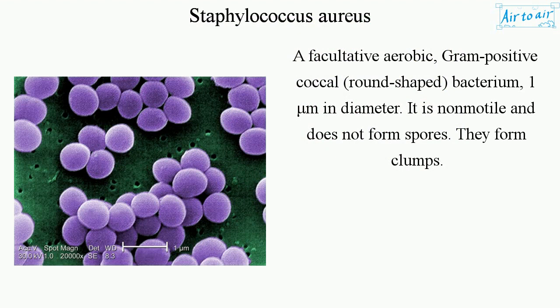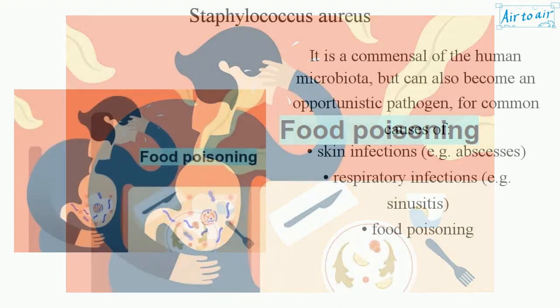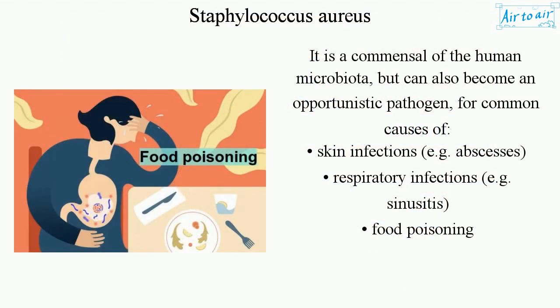They form clumps. It is a commensal of the human microbiota, but can also become an opportunistic pathogen, for common causes of skin infections, e.g. abscesses, respiratory infections, e.g. sinusitis, and food poisoning.